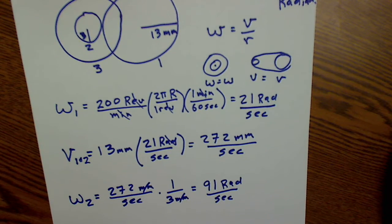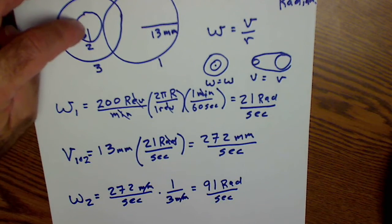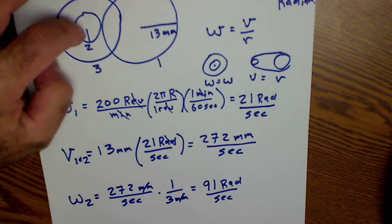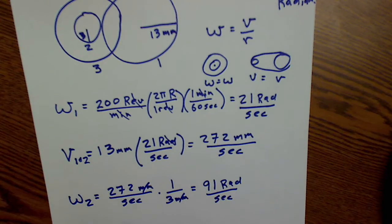What is the angular velocity of gear three? Well, the two gears are connected by an axle or the center point's the same. So they spin around the same center. So they have to have equal angular velocity. So angular velocity of gear three is 91 radians per second.